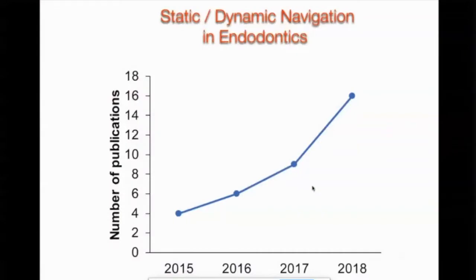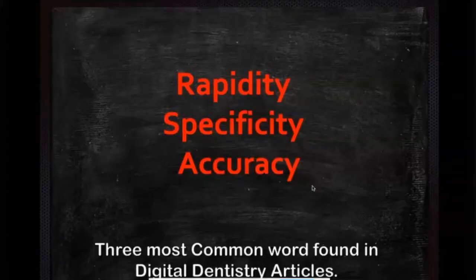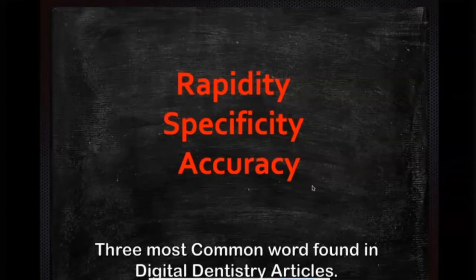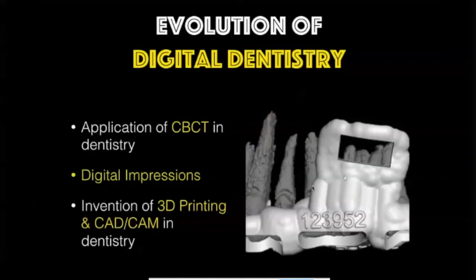Within the last four years, comparing articles on static and dynamic navigation endodontics, the publication graph has gone completely high. In any article on 3D printing, three common words appear: rapidity, specificity, and accuracy. Whenever we combine technology with endodontics, we are looking for accurate, predictable, specific, and rapid treatment outcomes. This evolution in digital dentistry started with CBCT, and along with that, intraoral scanners, 3D printing, and CAD/CAM technology have played a vital role.